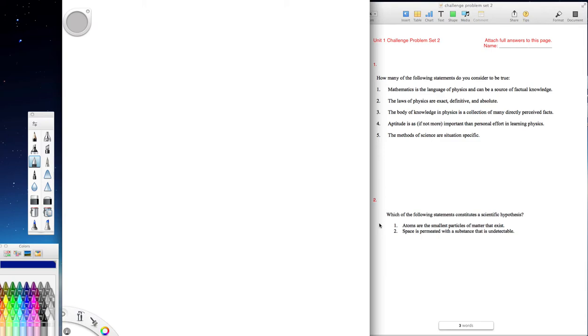Which of the following statements constitutes a scientific hypothesis? One, atoms are the smallest particles of matter that exist, and two, space is permeated with a substance that is undetectable. Think about what a hypothesis has to be. For a hypothesis, one thing you need to have is that it has to be testable. So of those two statements, which one can be testable? Well, I think the first one could be testable. You can see if there is something smaller than an atom. You can detect that, or if nothing is smaller than an atom. So you could prove that right or wrong. You don't use the word prove, but you say support the hypothesis.